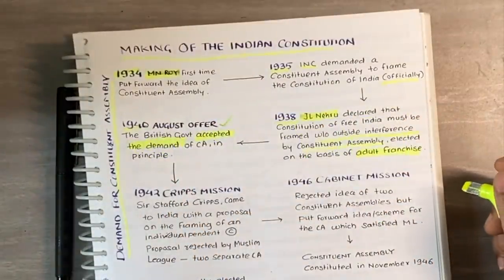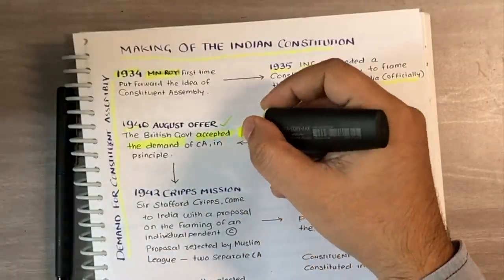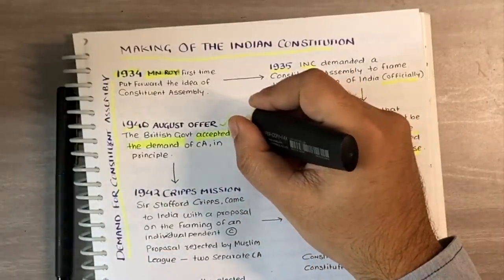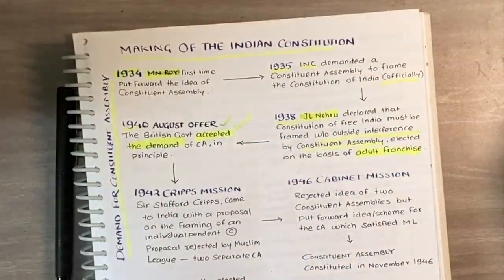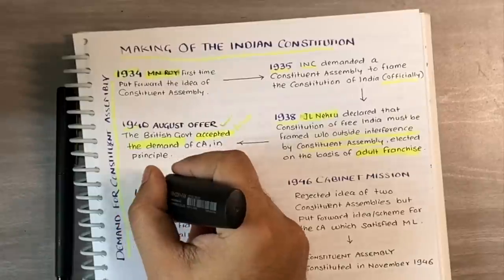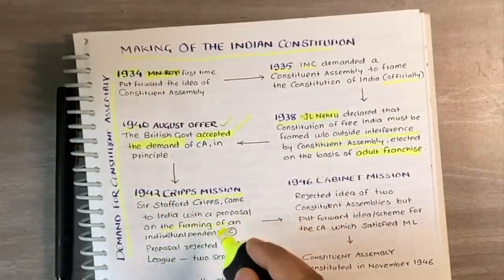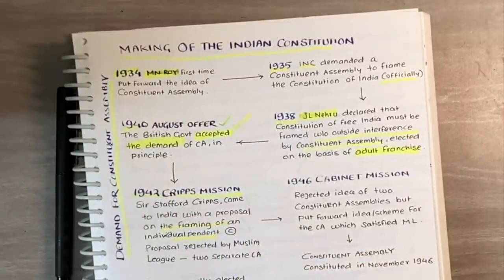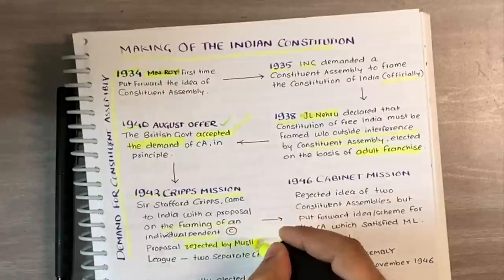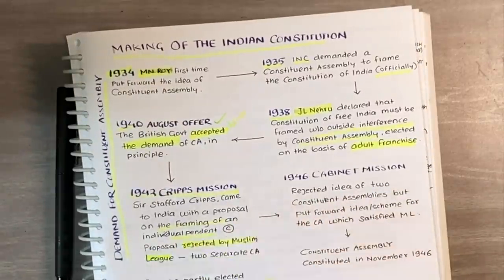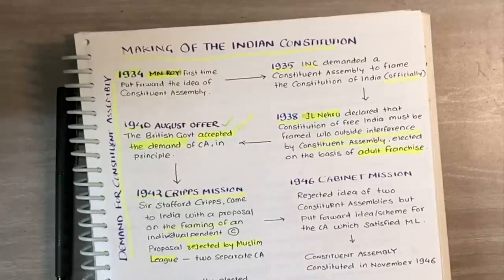This generous act by the British government was only a carrot, because they wanted Indian help in World War II and wanted to pacify the congress leaders. In 1942, Sir Stafford Cripps came to India with a proposal of framing an independent constitution. But this proposal was rejected by the Muslim League on the basis of the two-nation theory, as they wanted two separate constituent assemblies — one for India and one for Pakistan.